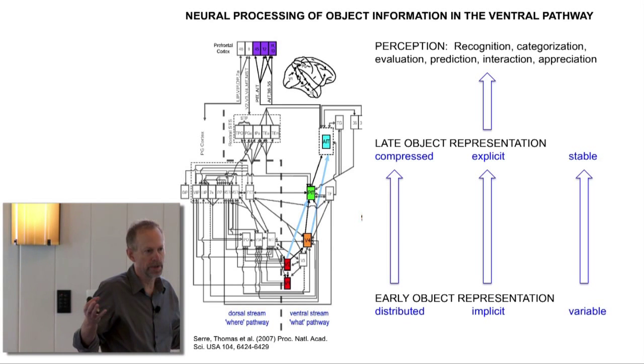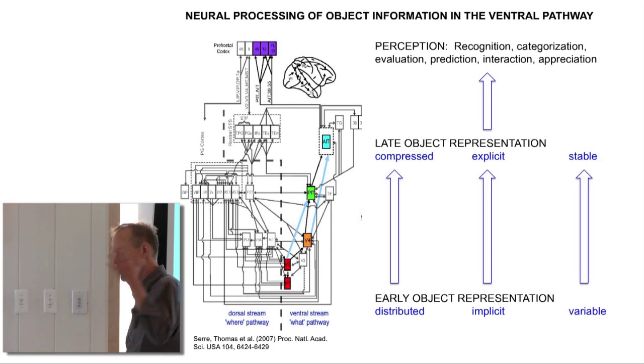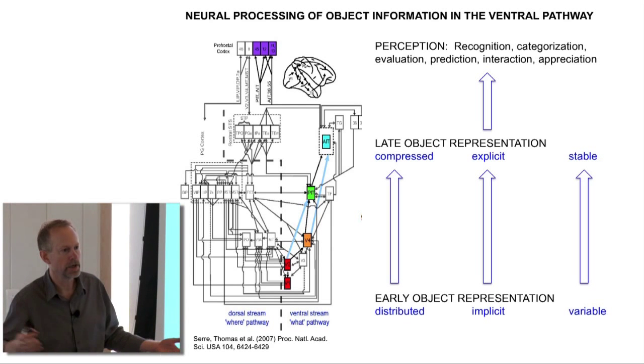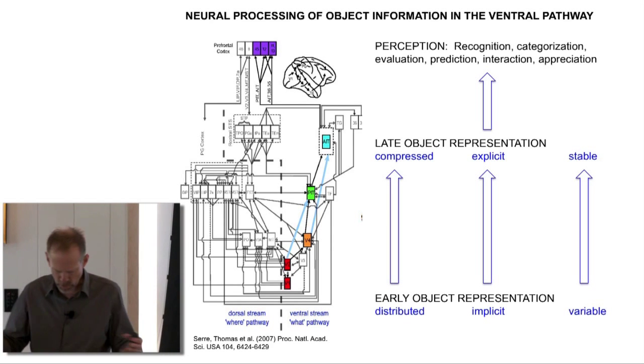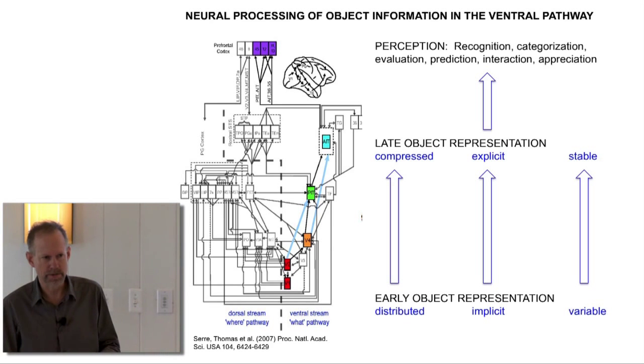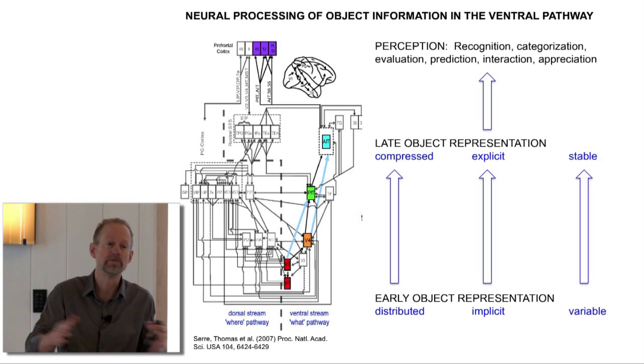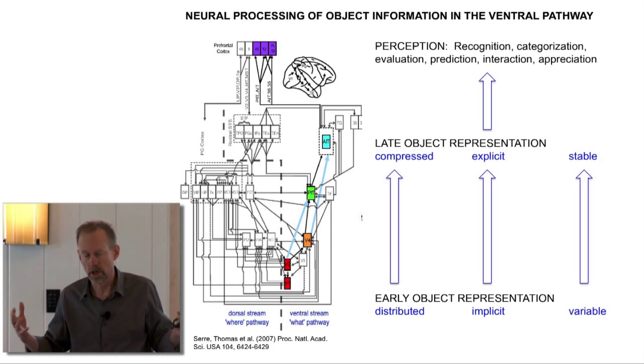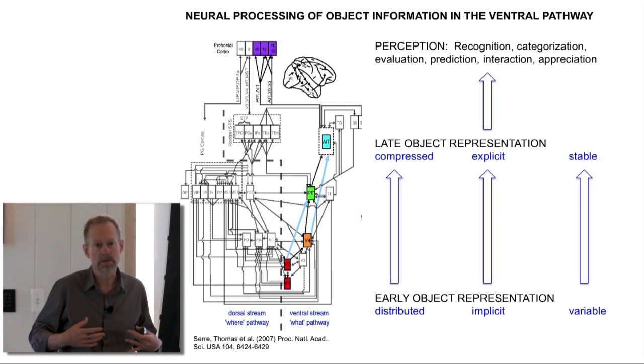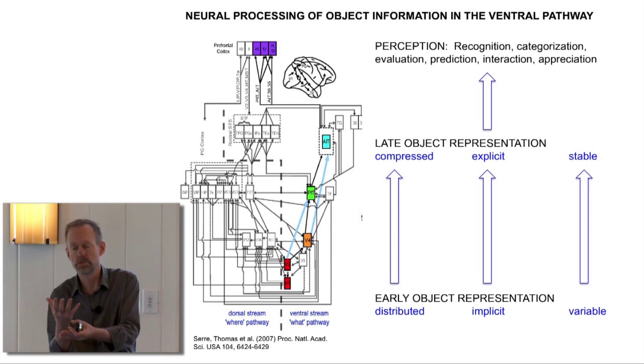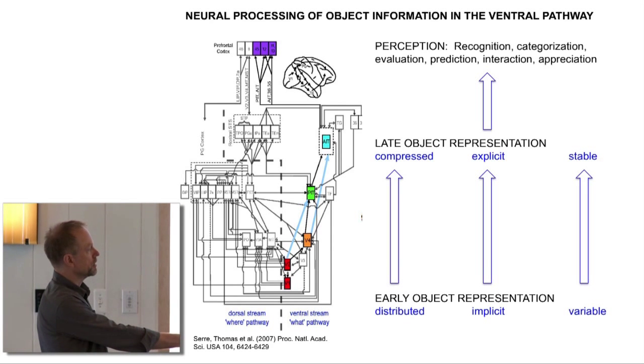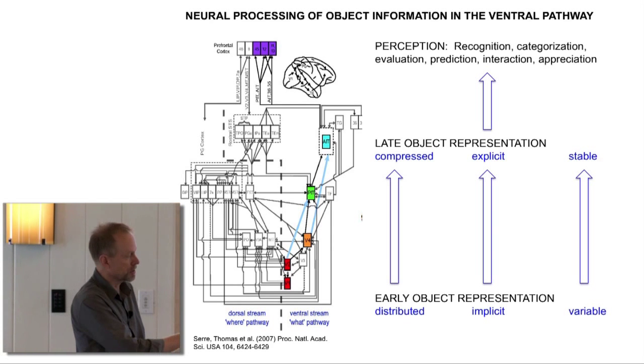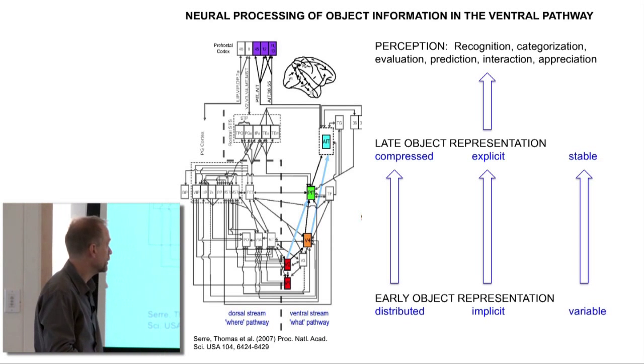An object like me, depending on my distance and orientation and postural pose and lighting and partial occlusion by the table, those kinds of variations produce a virtual infinity of possible retinal images. The system always has to generalize to the same solution. That's another thing that makes these early object representations not very useful for the rest of the brain.